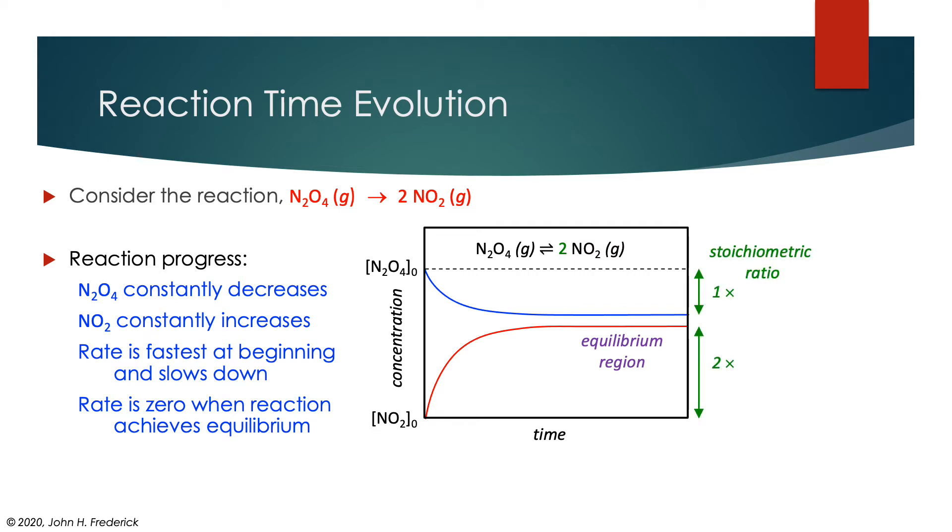Now we pointed out in module 4 that these curves also tell us something about the stoichiometric ratio. And in particular, since one N2O4 molecule results in two NO2 molecules, we should see gaps between their initial and equilibrium concentrations that reflect those stoichiometric ratios.